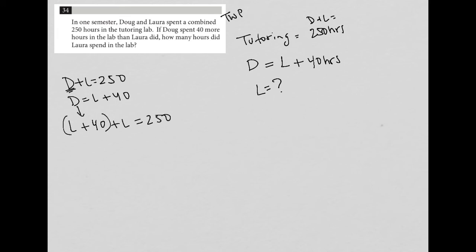Now I'm going to simplify this equation. So L plus L is 2L. So 2L plus 40 equals 250. And subtract 40 from both sides of the equation. So I'm left with 2L equals 210.